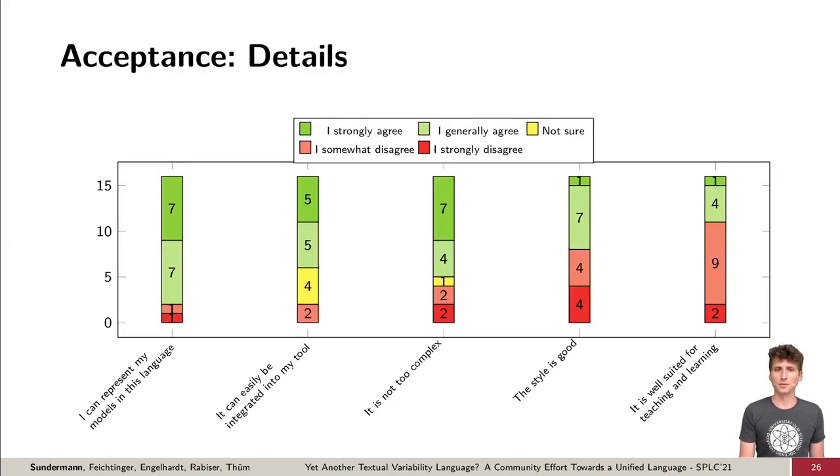Let's also take a look at a more detailed feedback of the community on the language design. The vast majority of participants can represent their models in UVL. Also, most claim that UVL can be easily integrated in their tool and is not too complex. However, there are some concerns on the style and the suitability for teaching and learning. One reason for the negative feedback here may be the comparison to graphical editors, which are typically easier to use and also to learn. Nevertheless, we still consider the concerns for future iterations of UVL. One way to support understandability and suitability for teaching are designated editors, syntax highlighting and linters, for example.